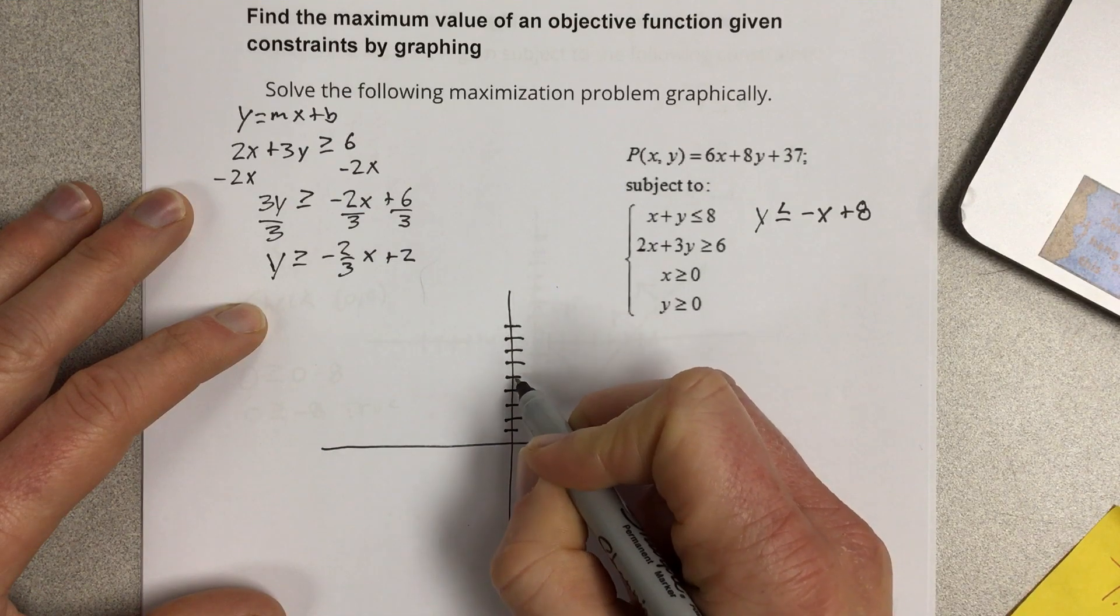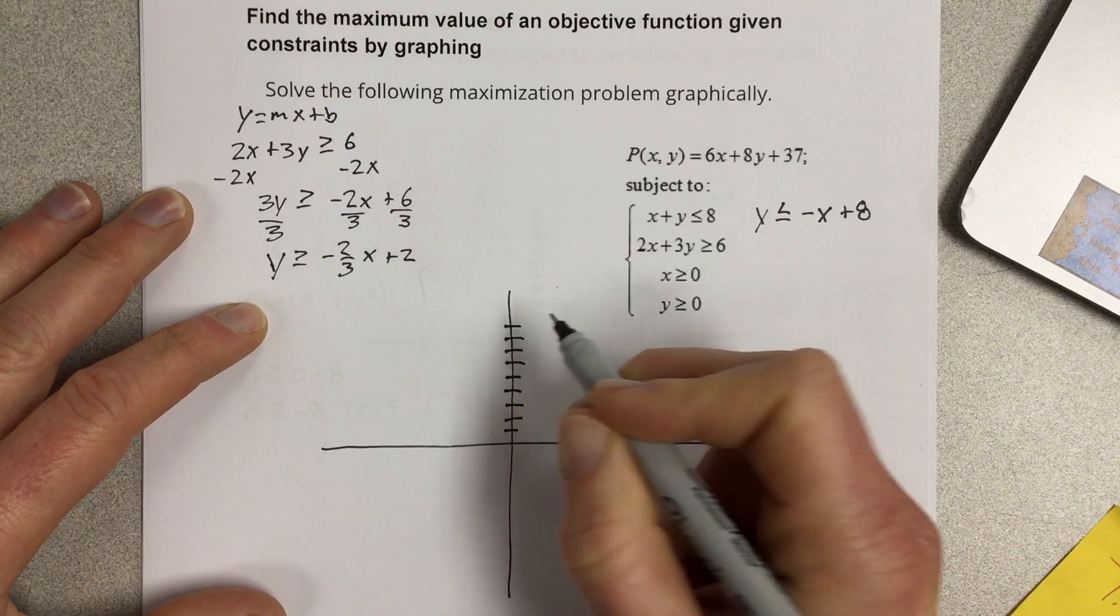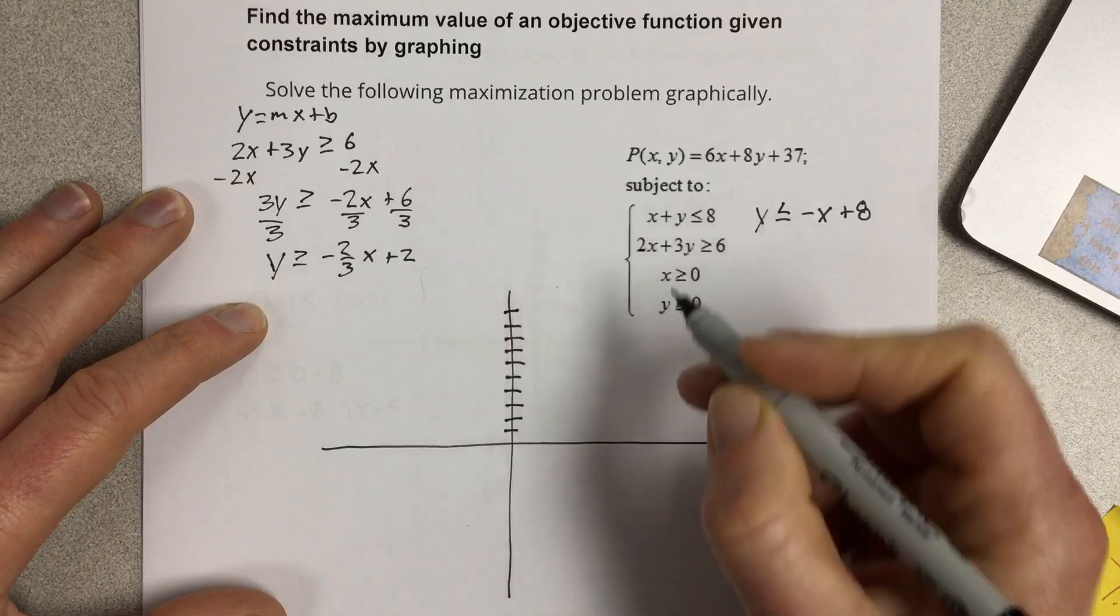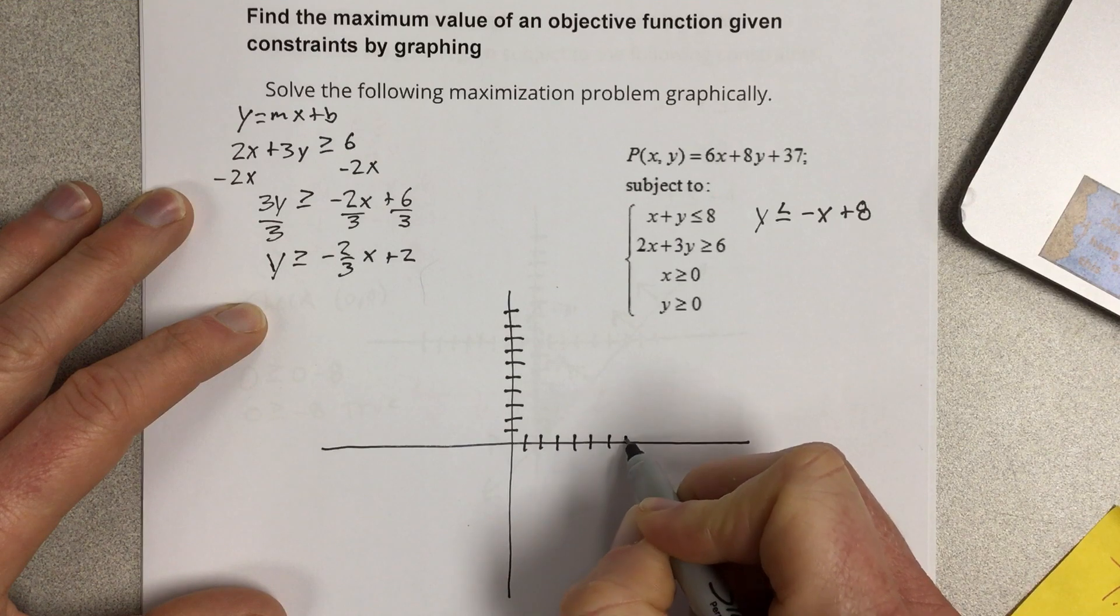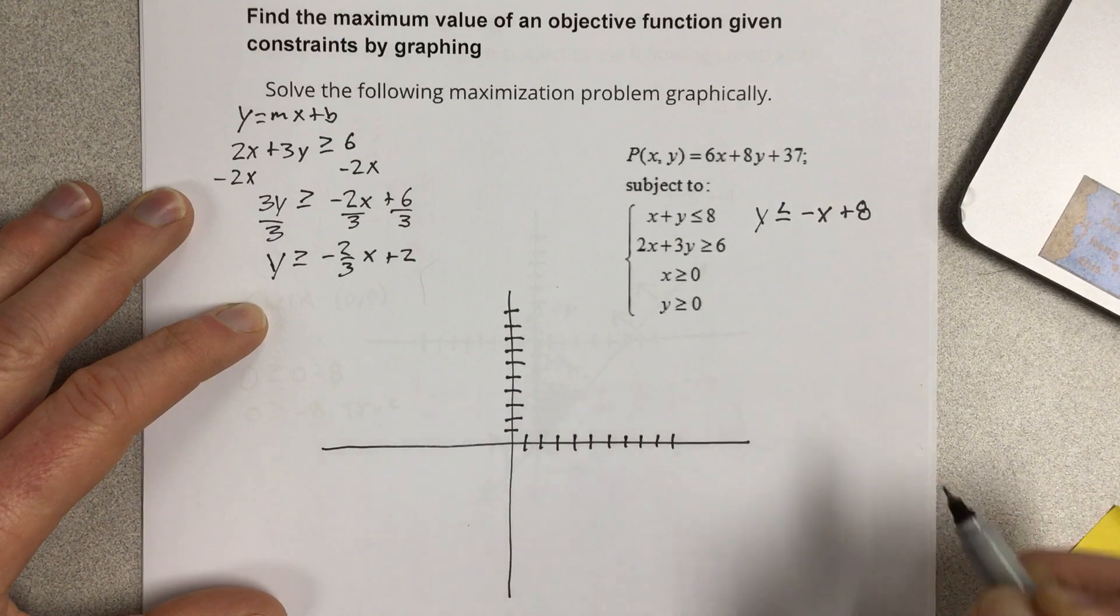Let's start by marking our coordinate plane. 1, 2, 3, 4, 5, 6, 7, 8, 9, 10 on both axes.